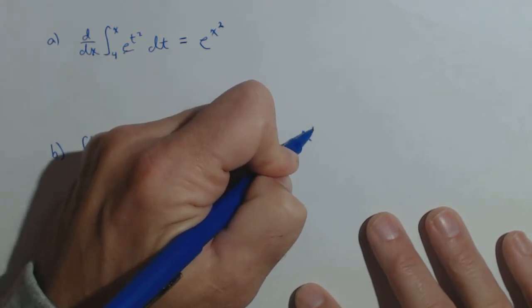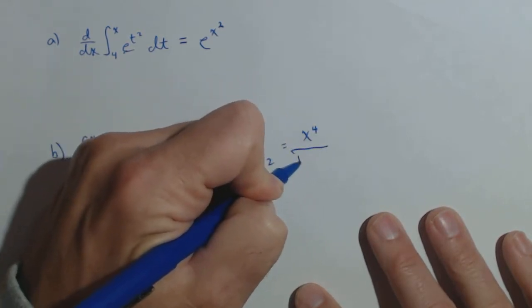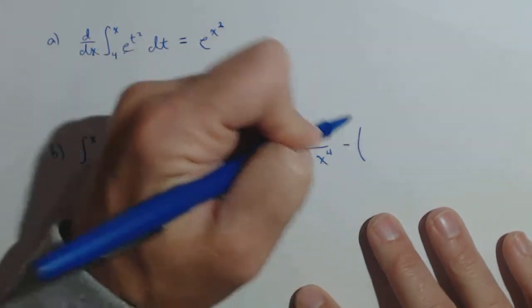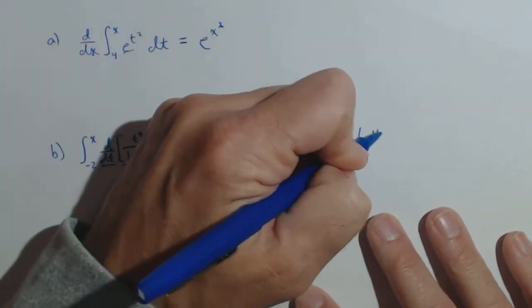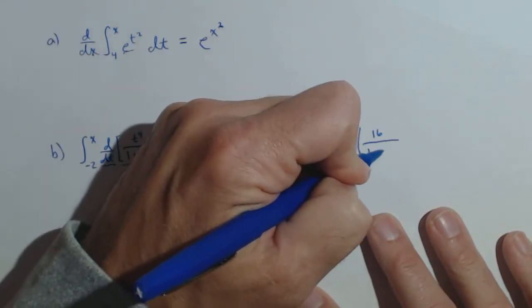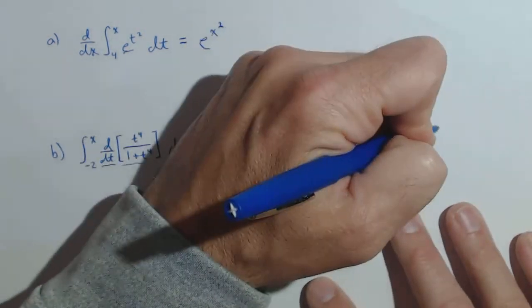So, in putting those in, we're gonna have x to the fourth over one plus x to the fourth minus, now we're gonna plug two in, two to the fourth is six, negative two to the fourth is a positive 16, over one plus 16,